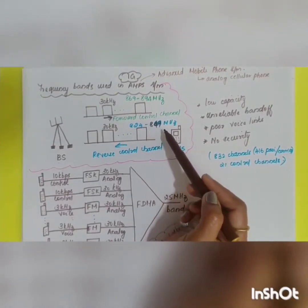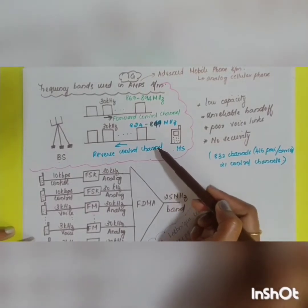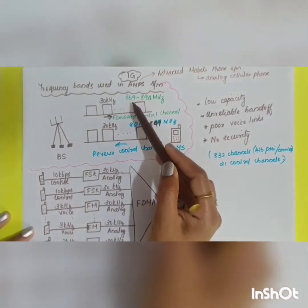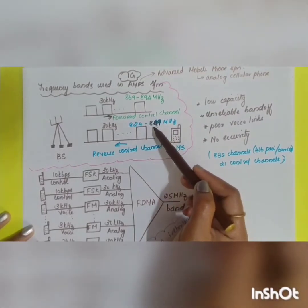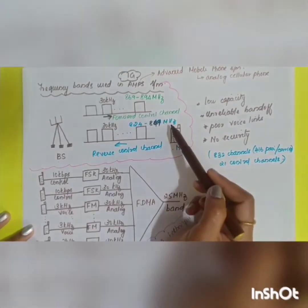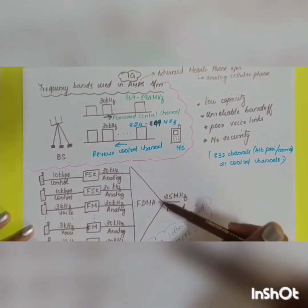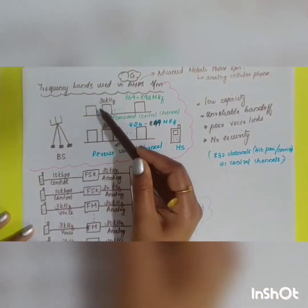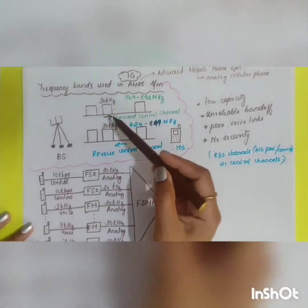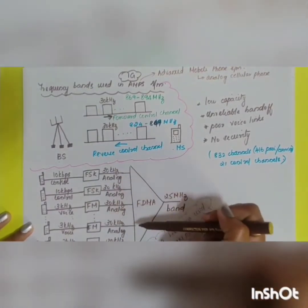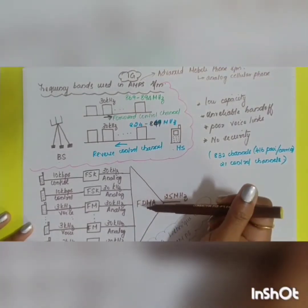The frequency range 869 to 894 MHz is allotted for the forward control channel, and 824 to 849 MHz is allotted for the reverse control channel. Each range spans 25 MHz, and this 25 MHz band is divided equally into 30 kHz channels using FDMA technology.